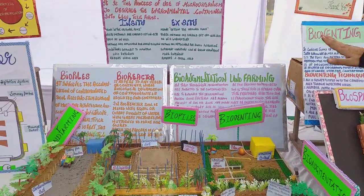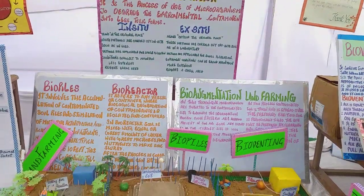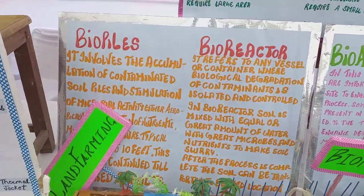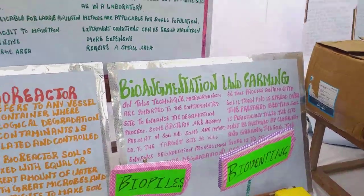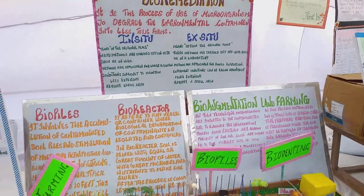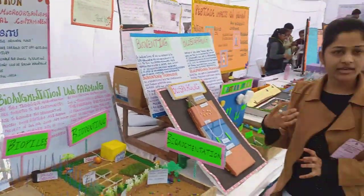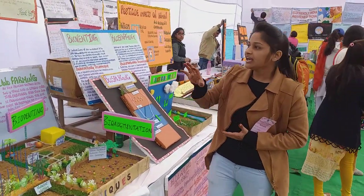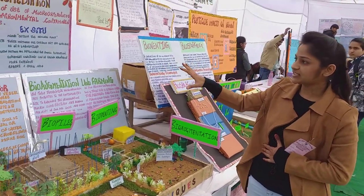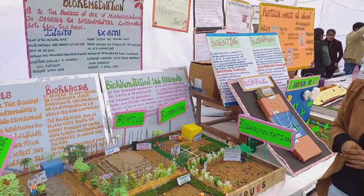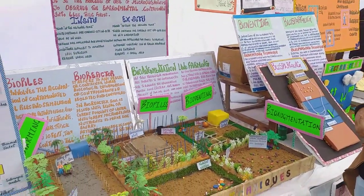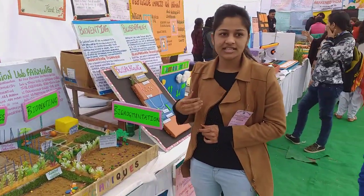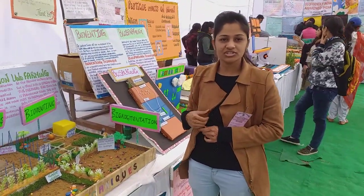In this regard, bioremediation is the best method for the treatment and degradation of pesticides. Bioremediation is the process in which we use microorganisms to degrade environmental contaminants such as pesticides into less toxic forms. It is mainly of two types: in-situ and ex-situ. In-situ is when the contaminated material is treated on the site, and ex-situ is when the contaminated material is treated off-site, such as in a laboratory or research sites.